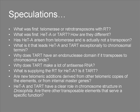We haven't mentioned this, but why does TART have an endonuclease domain if it transposes only to chromosomal ends and does not need to cut DNA? TART produces a lot of antisense RNA — why is that? What is supplying the reverse transcriptase for HeT-A transposition? It does not encode it itself. Is it using the RT of TART? Are new telomeric additions derived from other telomeric copies of the elements, or from internal master genes? It is clear to us now that HeT-A and TART have a role in chromosome structure of Drosophila. This suggests that maybe there are other transposable elements that serve specific functions, maybe even in other organisms.